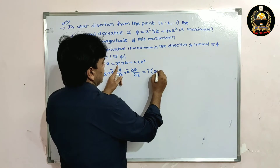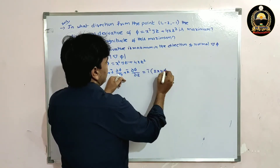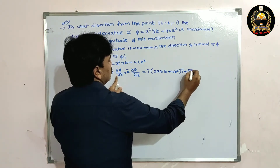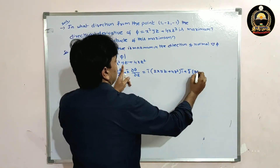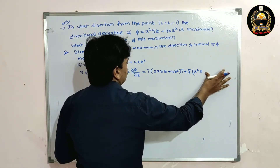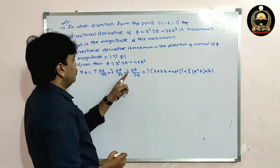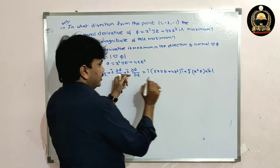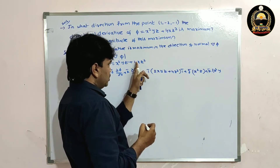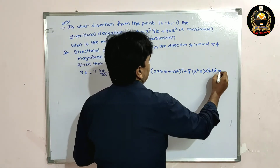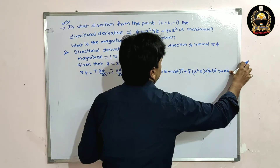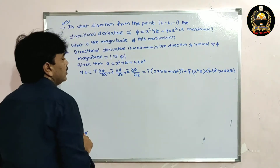For the i-bar component: derivative of x² is 2x, so we get 2xyz + 4z². For the j-bar component: derivative of y is 1, so we get x²z (the other term has no y, so it contributes 0). For the k-bar component: we get x²y plus 8xz (since derivative of z² is 2z, and 2×4 = 8).